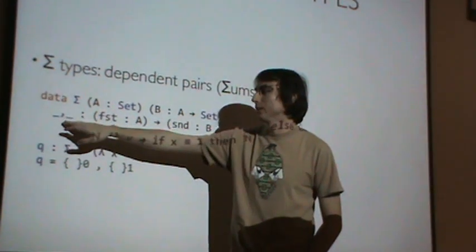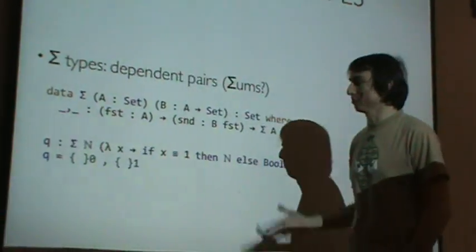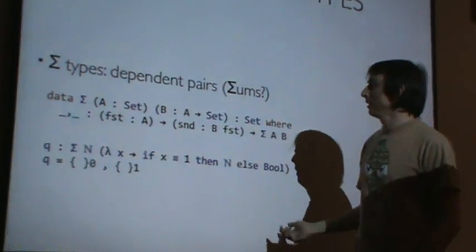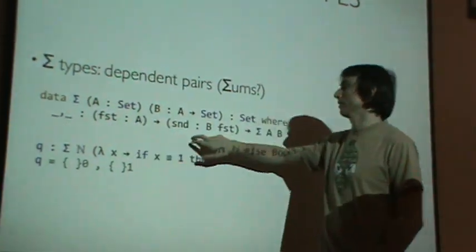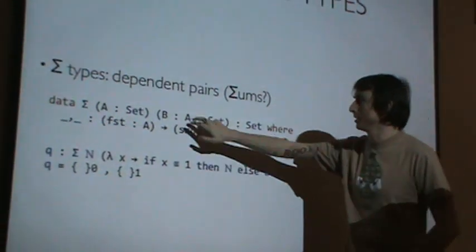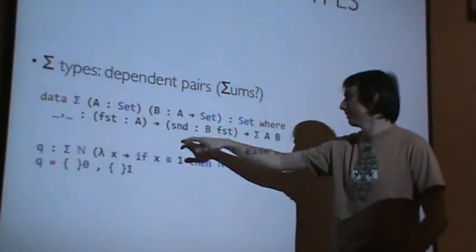It has a constructor called colon, which is what you'd expect from maybe Haskell. The constructor simply takes the value of type A for the first argument, and a value of type this function applied to the first argument for the second one.